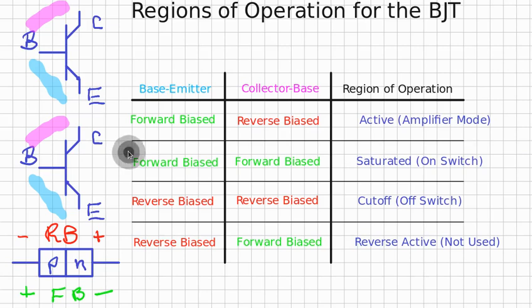If both the base-emitter and collector-base junctions are forward biased, the region is called saturation and the transistor acts like a conductor or closed switch.